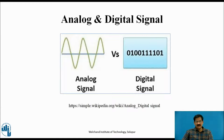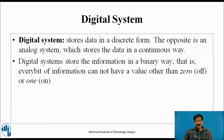This is the differentiation between analog and digital signals. An analog signal is a sinusoidal, continuous signal, whereas a digital signal is a discrete type signal having values either 0 or 1, represented by a stream of bits. A digital system stores data in discrete, digital form — the opposite of analog, which stores data in a continuous way. Every bit of information in a digital system cannot have a value other than 0 or 1.